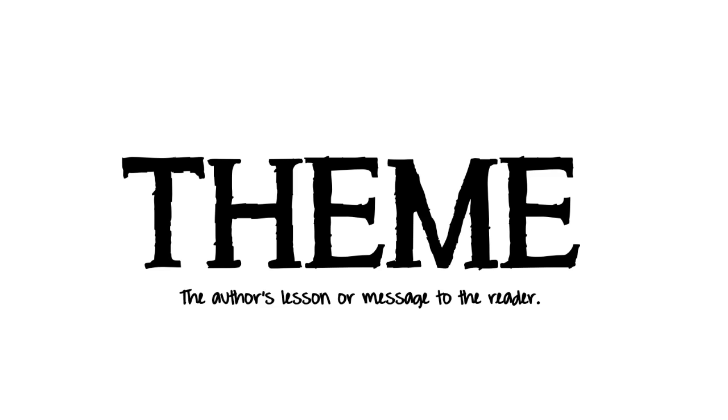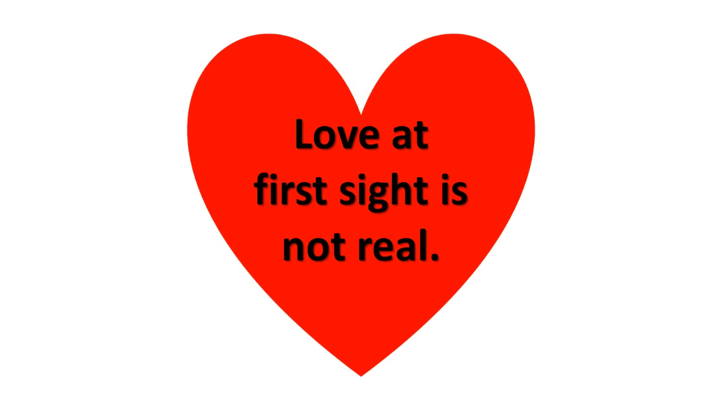One important note about theme: since most motifs point to or illuminate the theme, remember that a theme is a lesson or a message — it is not just an idea. Love is an idea; love is not a theme. You'd have to have a lesson attached to it, something like 'love at first sight is not real.' So when reading Romeo and Juliet, make sure you ask what Shakespeare is saying about love. That is symbolism and motif, and how motif relates to the theme — or sometimes the mood, but mostly the theme.